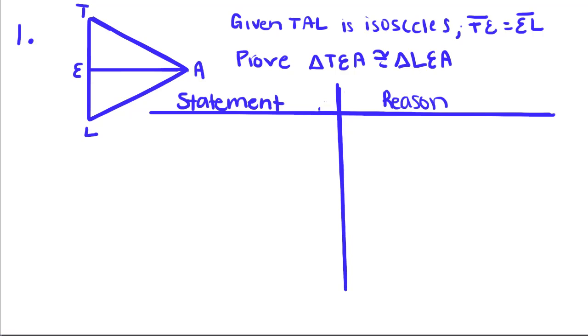Example number one: Given that TAL is isosceles and TE is equal to EL, prove that triangle TEA is congruent to triangle LEA. First we'll write down our given information. TAL is isosceles, TE equals EL.